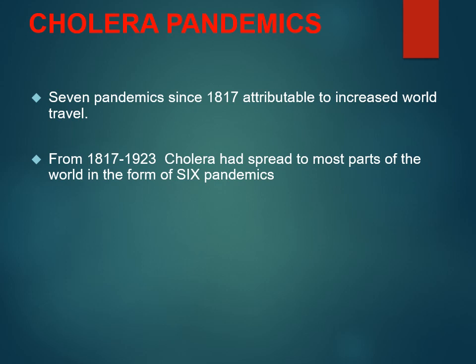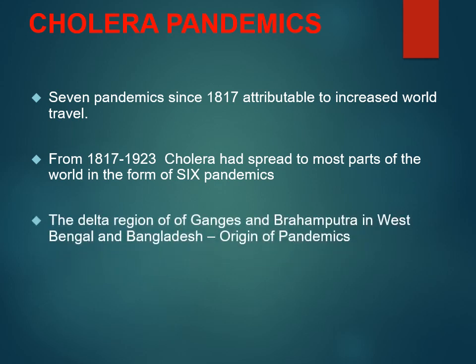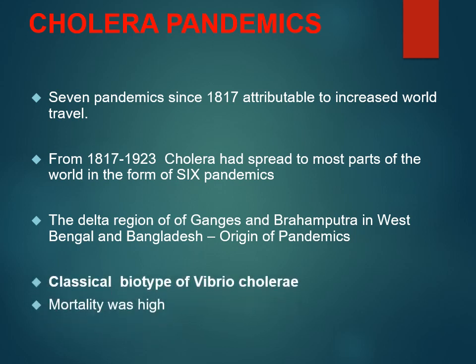All six pandemics had a similarity — they all started from India, specifically from West Bengal, the delta region of the Ganga and Brahmaputra rivers. All six pandemics were caused by the classical biotype of Vibrio cholerae, and mortality was very high in these six pandemics.